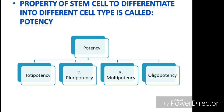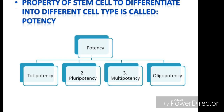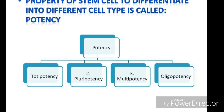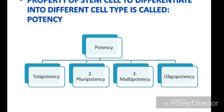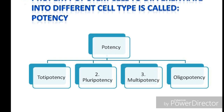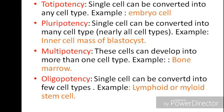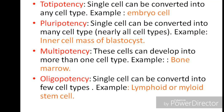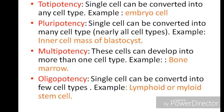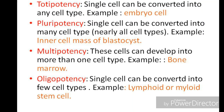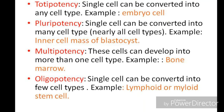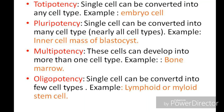The most important property of a stem cell is its cell potency — a cell's ability to differentiate into other cell types. Cell potency is categorized into totipotency, pluripotency, multipotency, and oligopotency. Totipotency is where a single cell can be converted into any cell type; for example, embryo cells are totipotent up to the morula stage. When a single cell can be converted into nearly all cell types, these cells are called pluripotent.